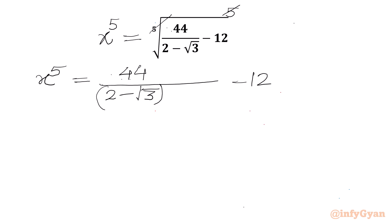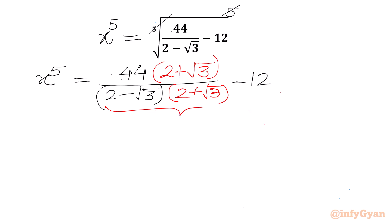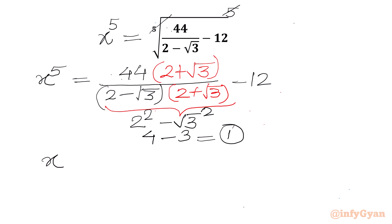Now I will rationalize the denominator. We multiply numerator and denominator by (2 plus square root 3). This is a minus b times a plus b form, so in the denominator we can use the difference of two squares formula: 2 squared minus (square root 3) squared equals 4 minus 3, so the denominator becomes 1. So we can write x⁵ equal to 44 times (2 plus square root 3) minus 12.